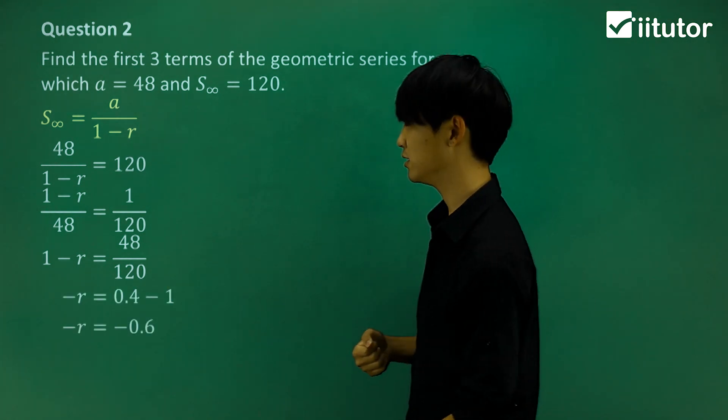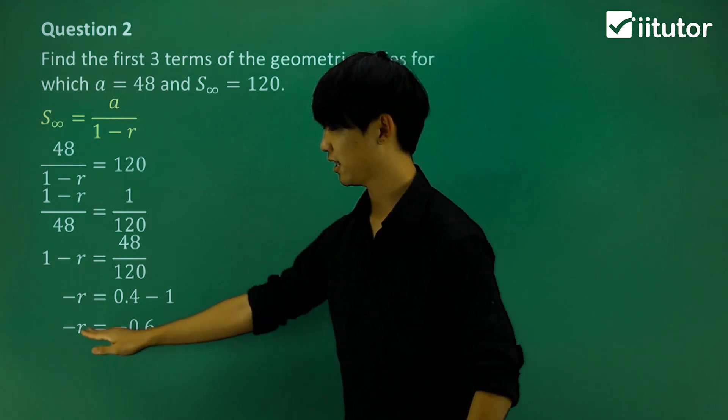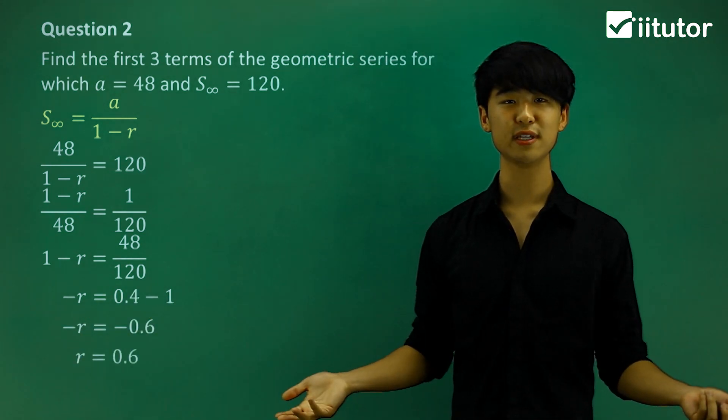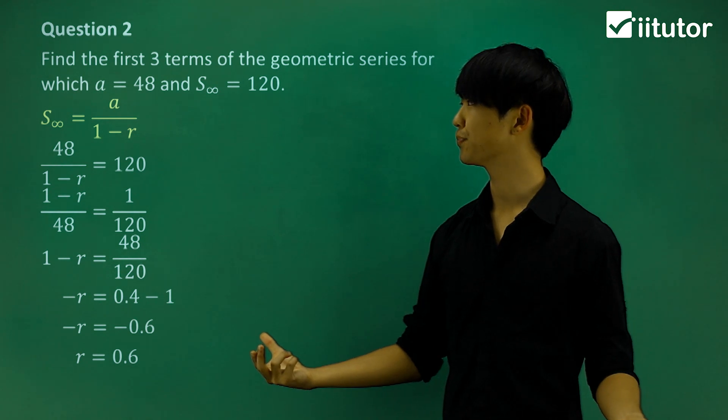We get 0.4 minus 1, which is negative 0.6. Multiply both sides by negative one, and we found the common ratio is 0.6.